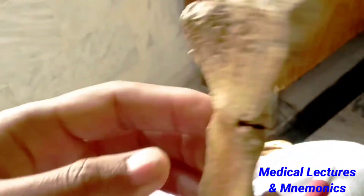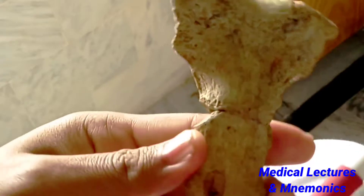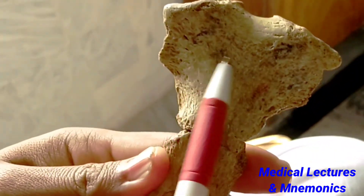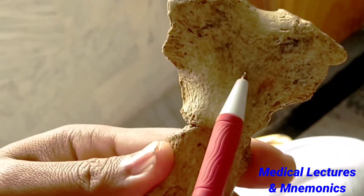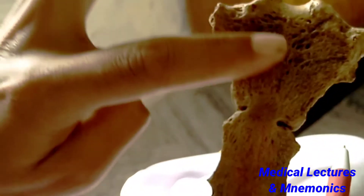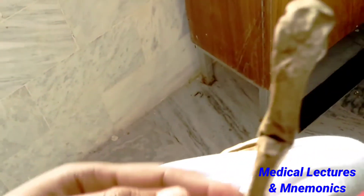One is the anterior surface and the other is the posterior surface. The anterior surface is convex and it is rough, as you can see here, and the posterior surface is smooth and concave.